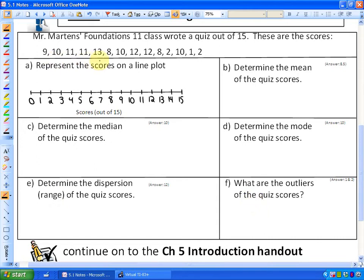First, we're going to represent these scores on a line plot. This looks very scattered just having the numbers this way—if we organize it, it's easier to see the data. Make a number line from 0 to 15, which is where I've started, and indicate each score on the number line.